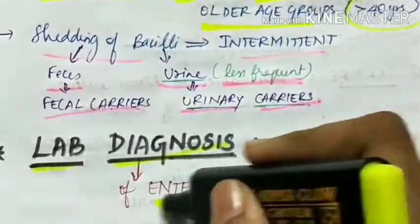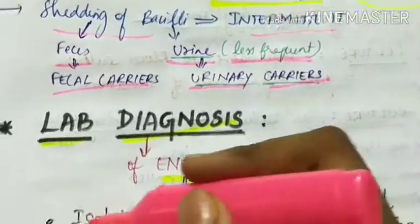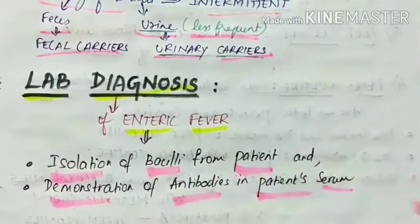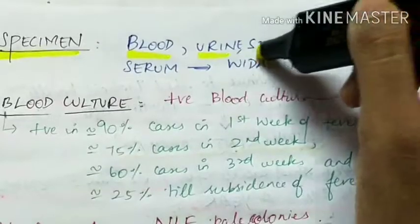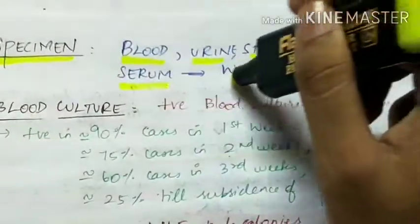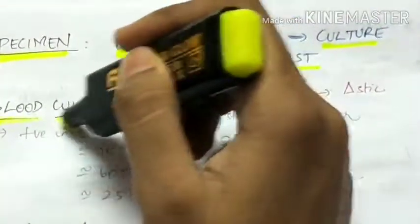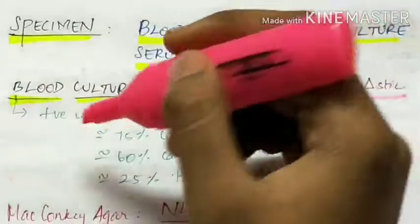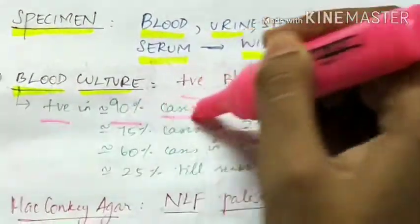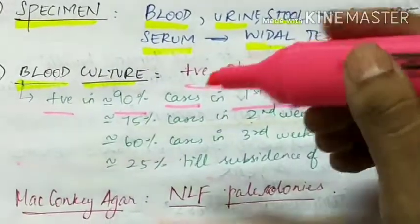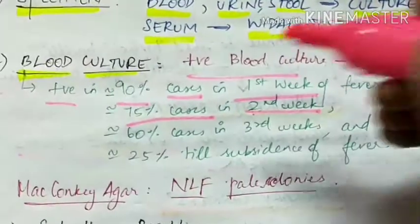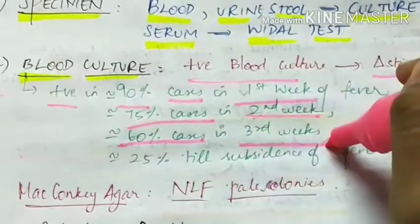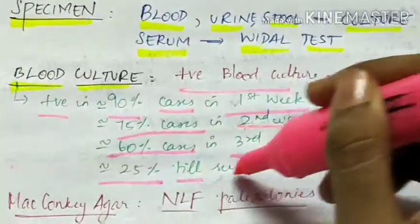For the lab diagnosis of enteric fever, it includes isolation of bacilli from the patient and demonstration of antibodies in the patient's serum. Specimens collected are blood, urine, and stool for culture, and serum for the Widal test. A positive blood culture is diagnostic of enteric fever. Blood culture is positive in about 90% of cases in the first week, 75% in the second week, 60% in the third week, and about 25% until subsidence of fever.